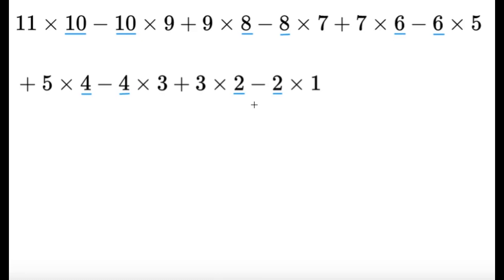Now, we want to factor 10, 8, 6, 4, and 2 in the two terms they're a part of. So for example, the 11 times 10 and the 10 times 9, I can factor the 10 out. And that's just going to leave me with 11 minus 9.